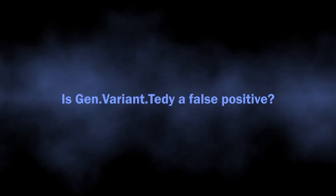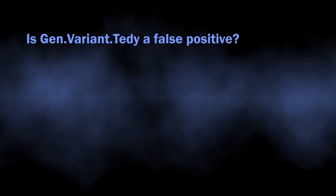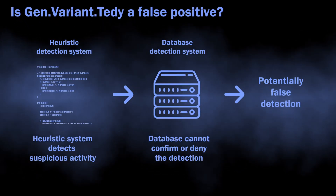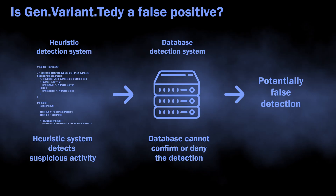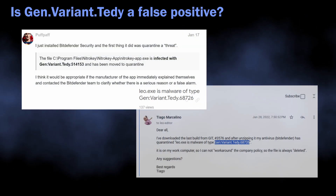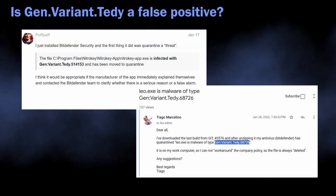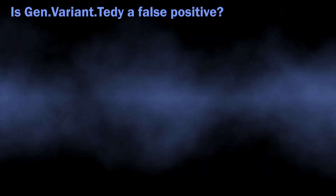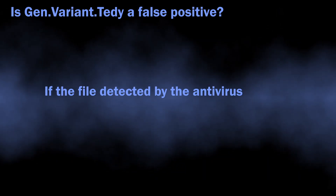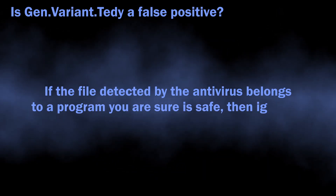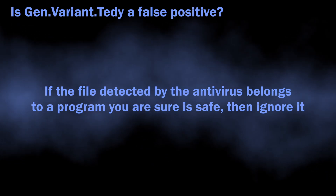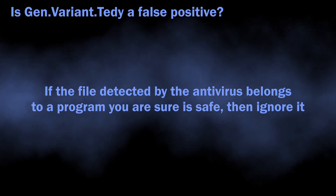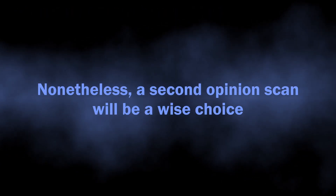But what if that is a false positive detection? I have already mentioned that this detection comes from the heuristic system, which is prone to false detections. With this specific one, chances are the program does some activities with system configuration files that the antivirus considers malicious, despite the program and the actions being completely legitimate. If you see that the detection flags a file that belongs to a safe program that you are sure about, then it is likely just a false positive and there is no real threat to your system. Still, visual analysis alone is not enough to say for sure.